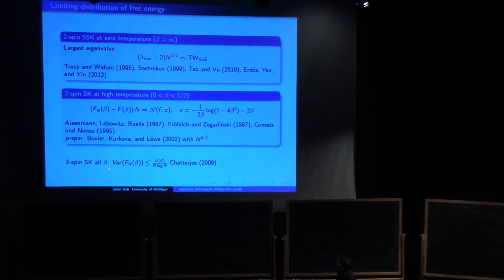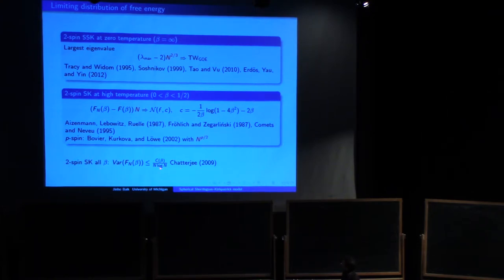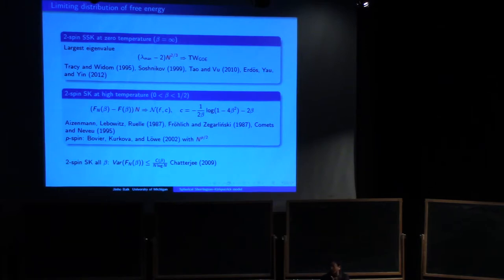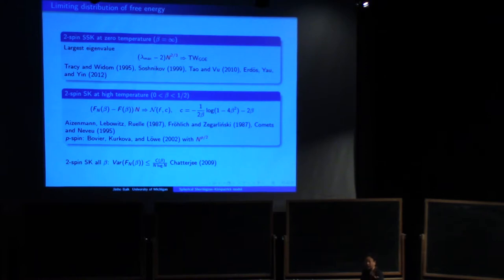For general beta, there is a result by Chatterjee — who I believe is talking this afternoon — showing superconcentration: the variance of F_n is bounded above by (1/n)*log(n), meaning fluctuations are at most 1/(sqrt(n)*log(n)), which is smaller than the classical CLT scale. He did this for the harder SK model at all temperatures, which is a very important contribution.